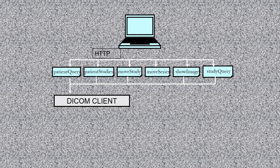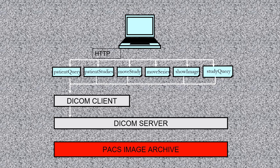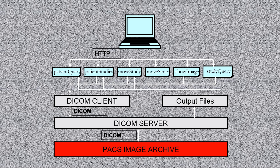HTTP has a number of different methods for utilizing and transferring information. Let's look at this process starting with the DICOM client requesting information from the DICOM server. The DICOM server retrieves the information from the PACS image archive or storage — the information must be in DICOM format to be manipulated. It is pulled from the PACS image archive and pushed to the DICOM server, which can be queried from different stations simultaneously. The data is then converted using a computer graphics interface into an image to be viewed.